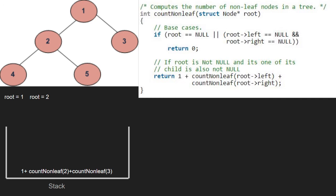Again, as 2 is not null and 2 is not a leaf node, we call for the left and right of 2. So now, root will point to 4.